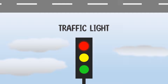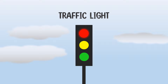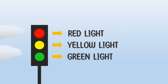First, we will learn traffic light. Traffic lights are used to control the flow of traffic. Traffic lights control vehicles to stop, give a warning, and signal to proceed. Traffic lights have three colors: red, yellow, and green.